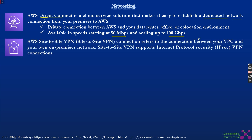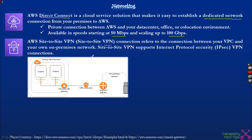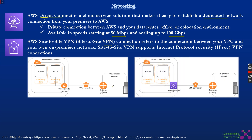Another option to connect on-premises to AWS is VPN — we can establish site-to-site VPN connections, making data communication very secure. Within the VPC we have a Virtual Private Gateway, and on the on-premises side there is a Customer Gateway. We establish the VPN connection between the Virtual Private Gateway and the Customer Gateway, ensuring secure data communication between on-premises and AWS.